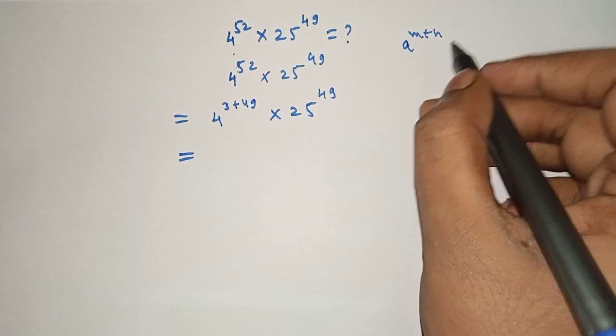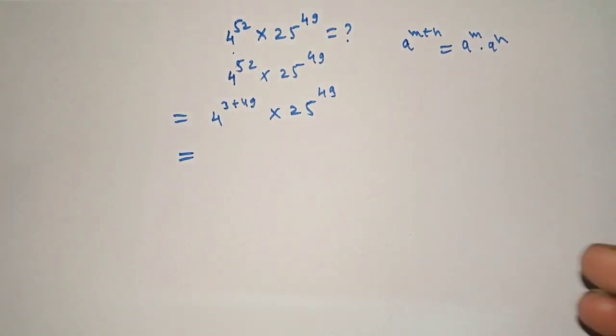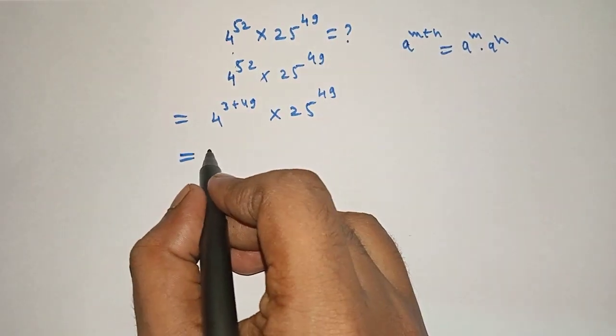Here we will use the rule when a raised to m plus n, then it can be written as a raised to m times a raised to n.